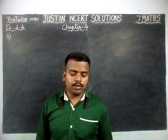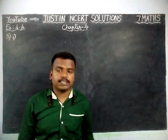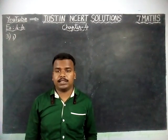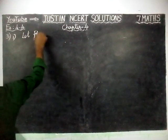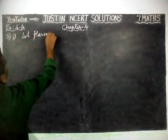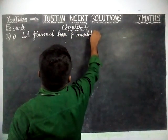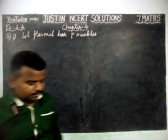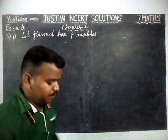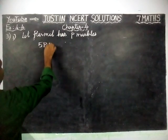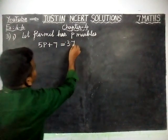The question is: solve the following. First question — Irfan says that he has 7 marbles more than 5 times the marbles Permit has. We are going to take: let Permit has P marbles, because we don't know how many marbles Permit has. Now we are going to form the equation: 5 times of Permit's marbles is 5P, plus 7, equal to — if Irfan has 37 marbles, this is the equation: 5P + 7 = 37.